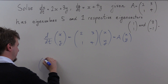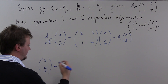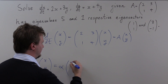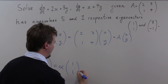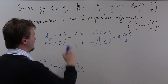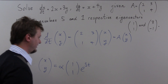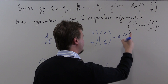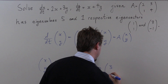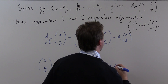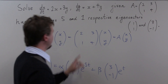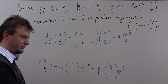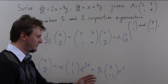The general solution is (x, y) equals alpha times the first eigenvector (1, 1) times e to the power of the first eigenvalue times t, plus beta times the second eigenvector (−3, 1) times e to the power of the second eigenvalue times t. This is the general solution for arbitrary constants alpha and beta.